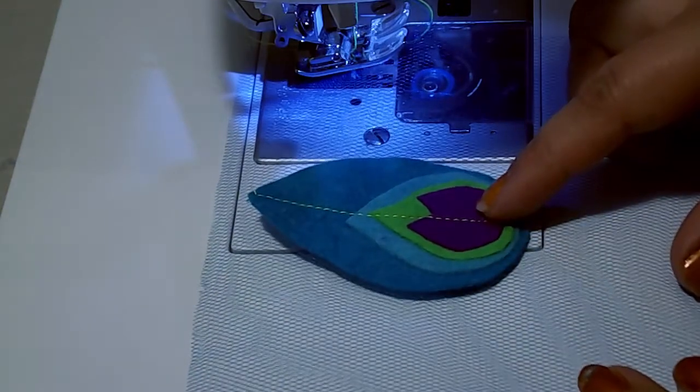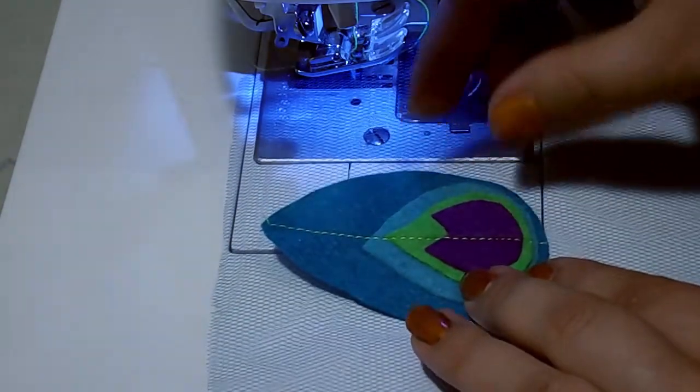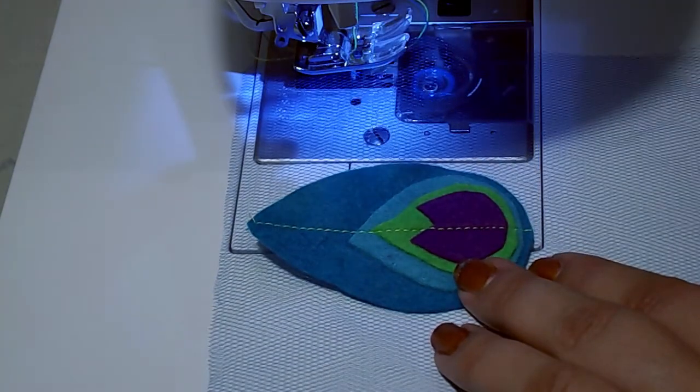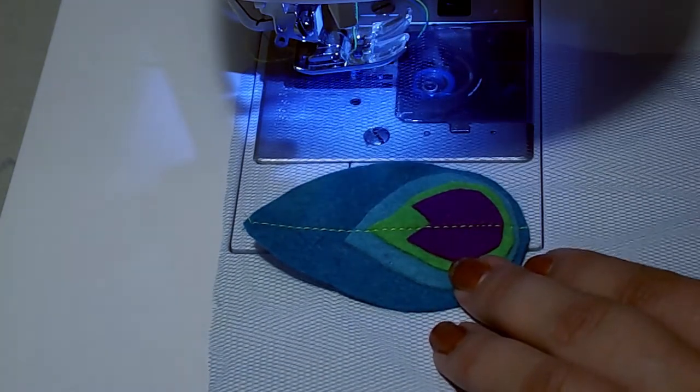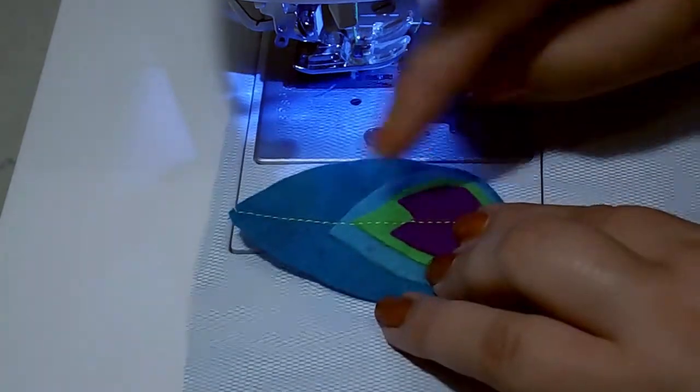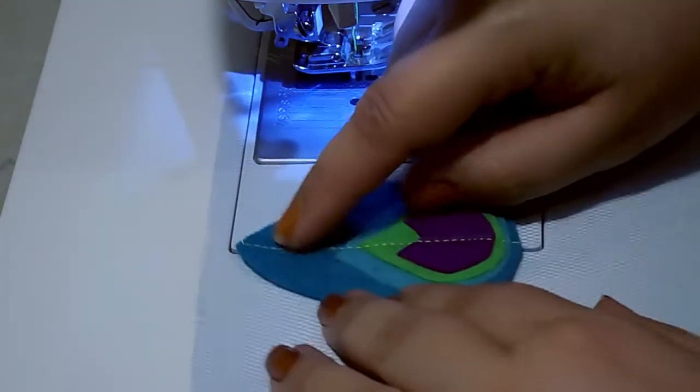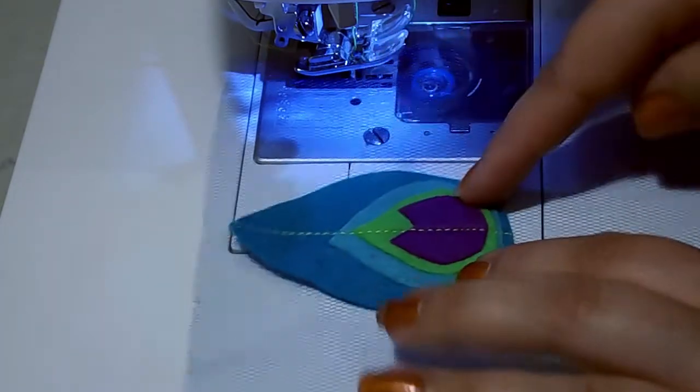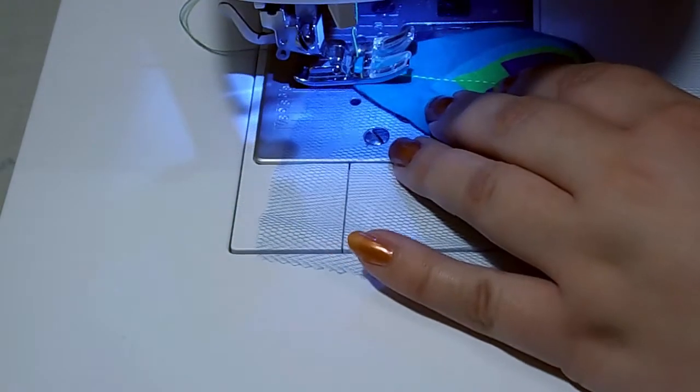Once we've sewn all our feathers together, we are now going to select 15 pieces of tulle to apply our feather felt pieces to. We'll be stitching out on an angle from the bottom of our felt up into the corner on each side like so.